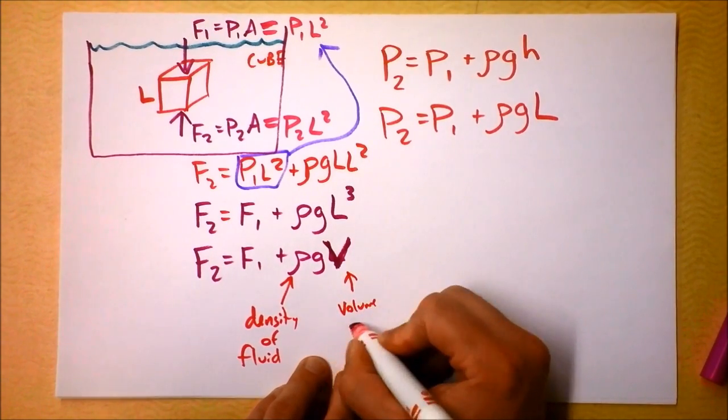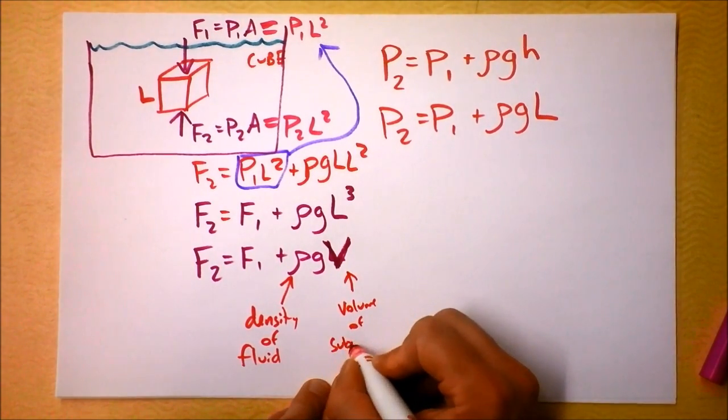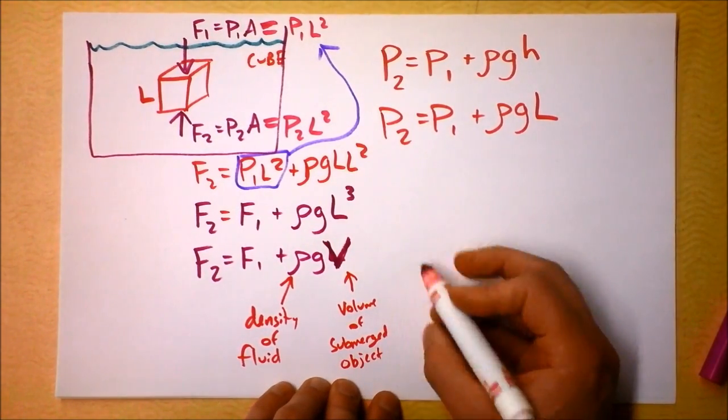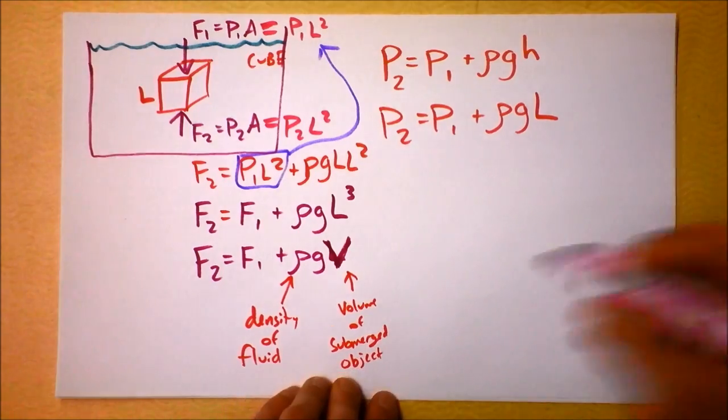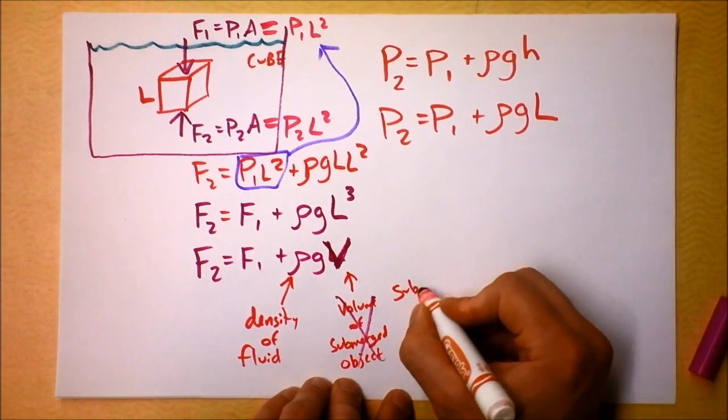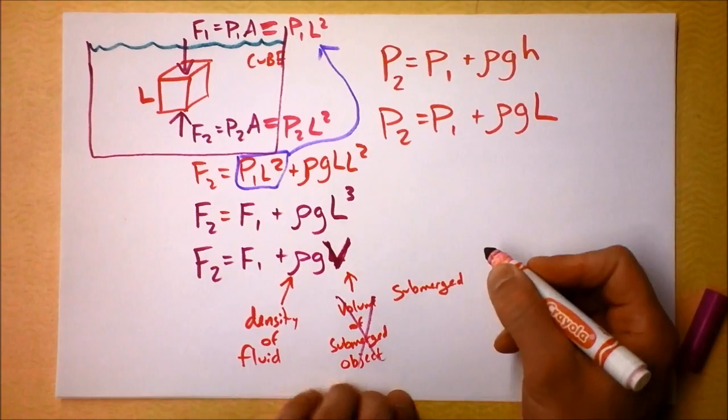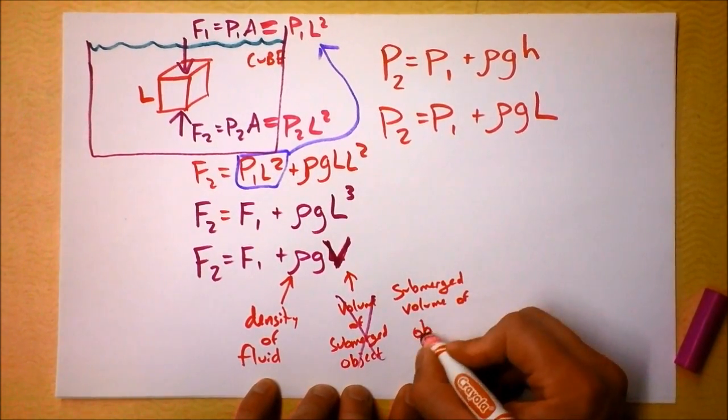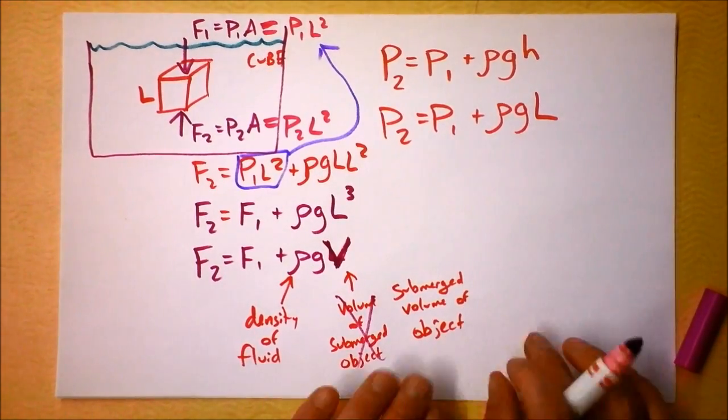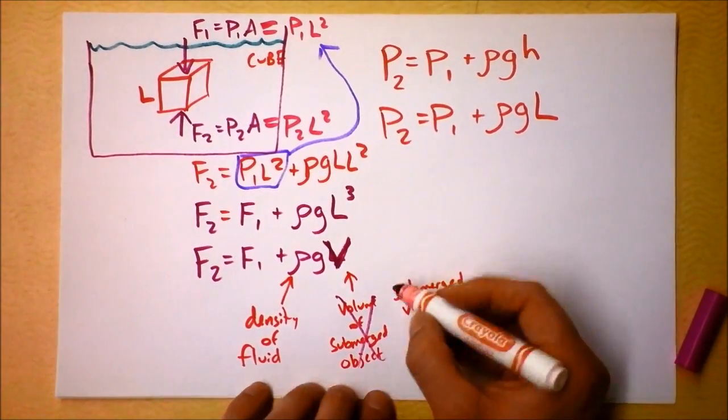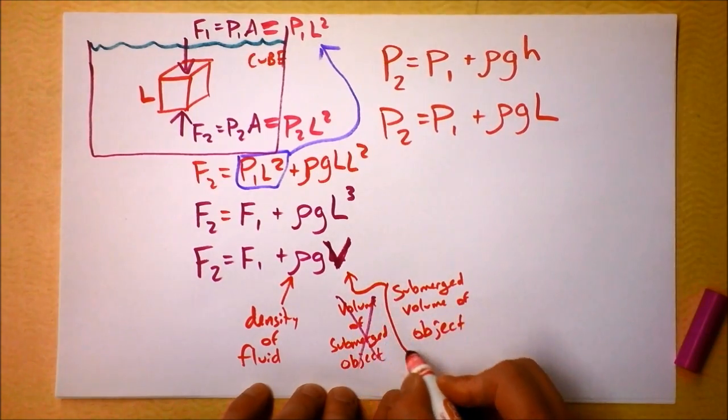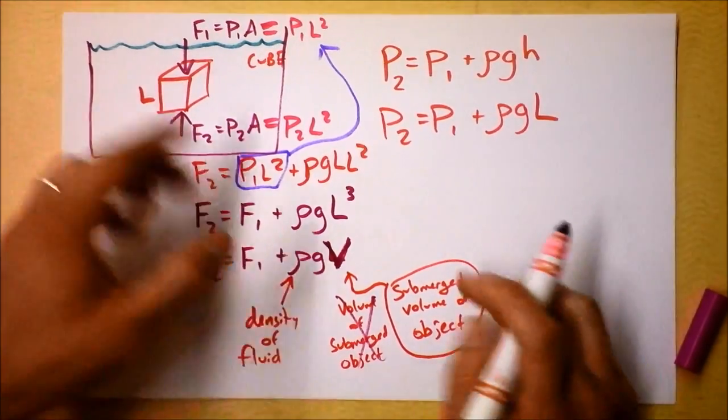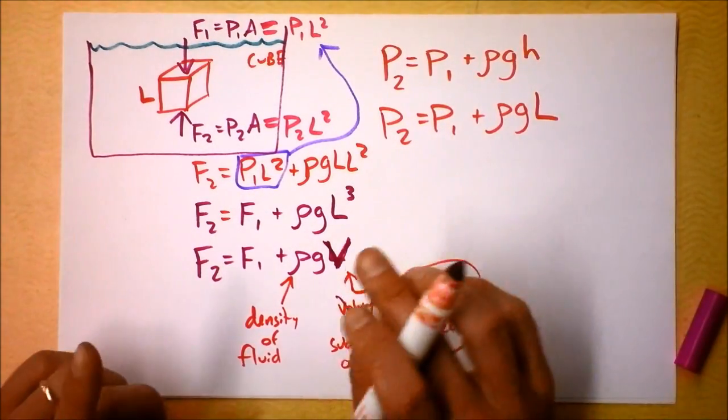And this volume here this is the volume of the submerged object. This is just baby G. This is volume of submerged object. Or perhaps I should be more careful and call it yeah let me call it instead submerged. This is a very subtle distinction I'm going to say submerged volume of object because I might have a situation where not all of the object is being submerged. So I have to call this the submerged volume of the object. In this case of course the volume of the submerged object and the submerged volume of the object are the same thing. But that won't always be the case.